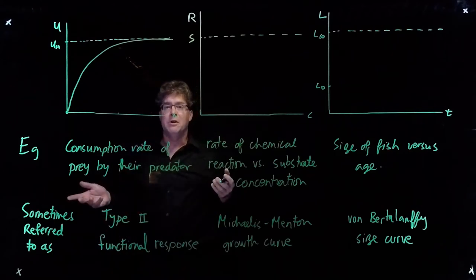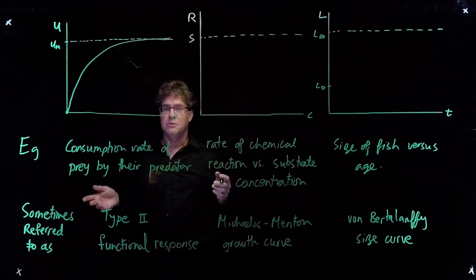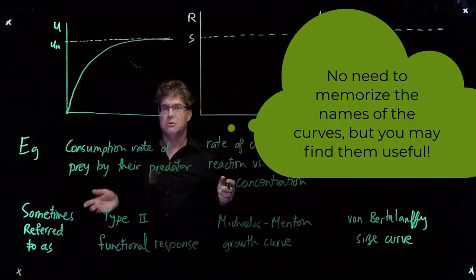This consumption rate curve is often referred to as a Type II functional response by mathematical ecologists.